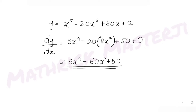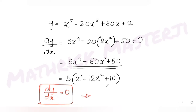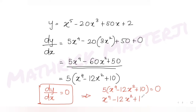Taking out the factor of 5 gives us 5(x⁴ - 12x² + 10). Setting the first derivative equal to zero: dy/dx = 0 gives us 5(x⁴ - 12x² + 10) = 0, which simplifies to x⁴ - 12x² + 10 = 0.